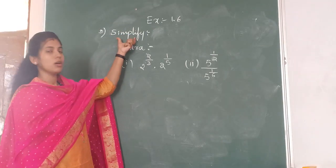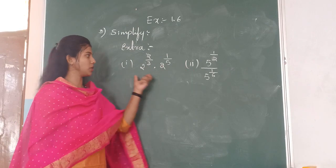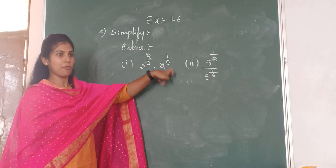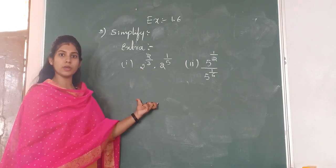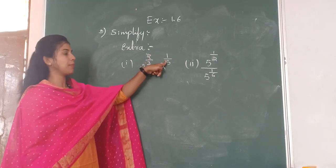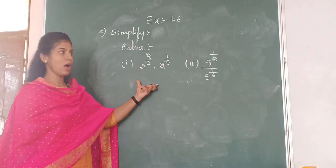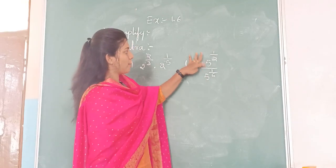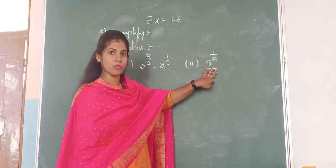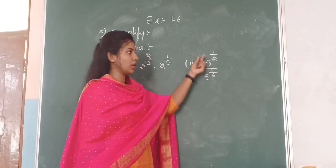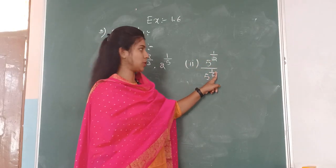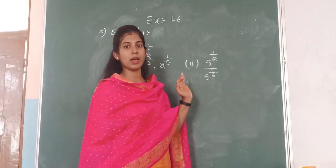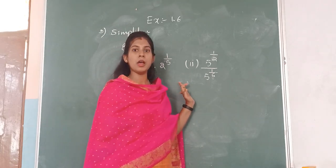Based on the third problem — simplify — there are two practice questions. The first one is 2 to the power of 2 by 3 into 2 to the power of 1 by 5, which follows the first law of exponents where bases are same and powers are added. The second follows the third law with division and subtraction of powers. Try both problems and get the answer. Here we have completed the full chapter of number system.